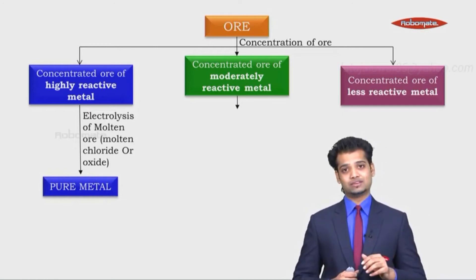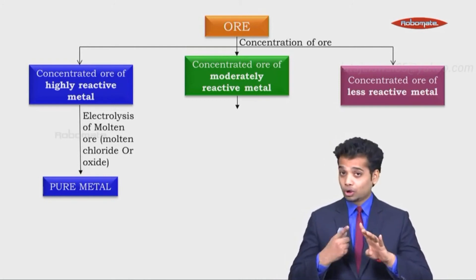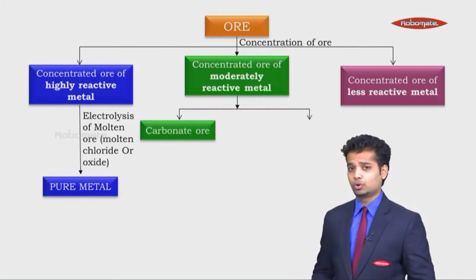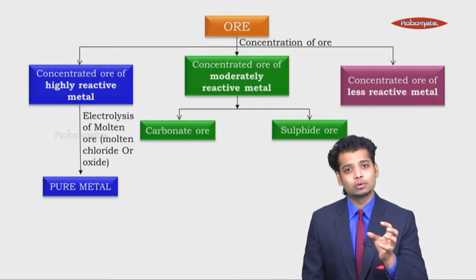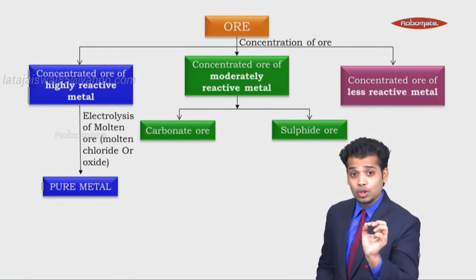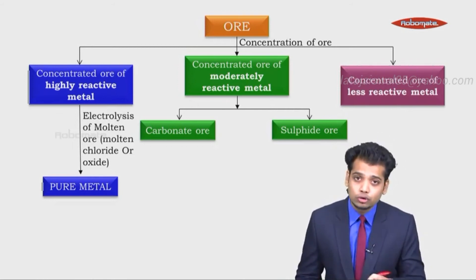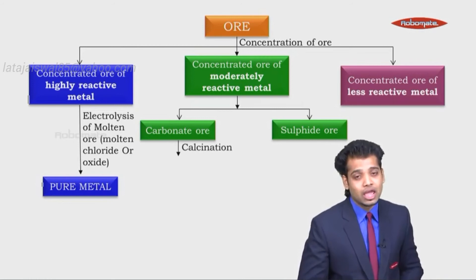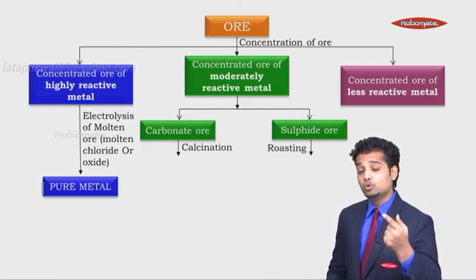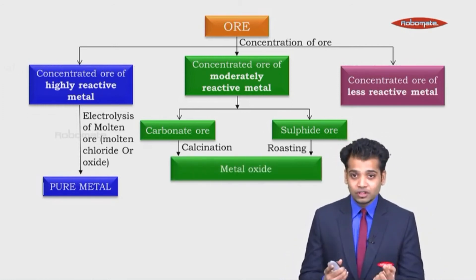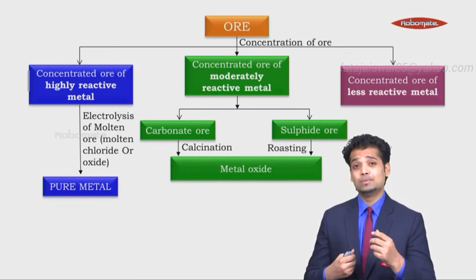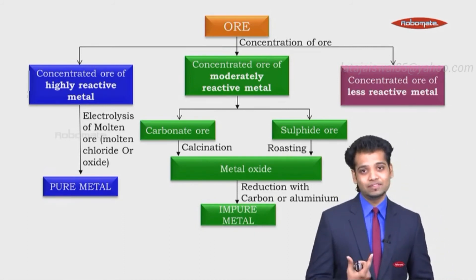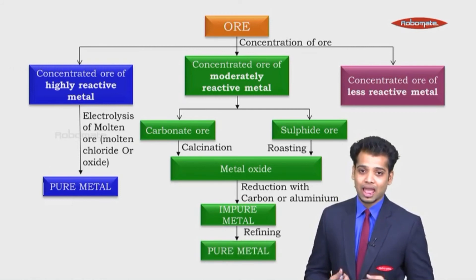Concentrated ore of a moderately reactive metal covers zinc, iron, and lead. These are medium reactive metals. You can find a carbonate ore or a sulphide ore. If you get a carbonate ore, you convert it into oxide using calcination. For sulphide ore, you roast the metal to convert sulphide into oxide. After this process, a metal oxide is formed, which can be reduced using a reducing agent like carbon or a highly reactive metal like aluminium. The resulting impure metal is then refined to get a pure metal.